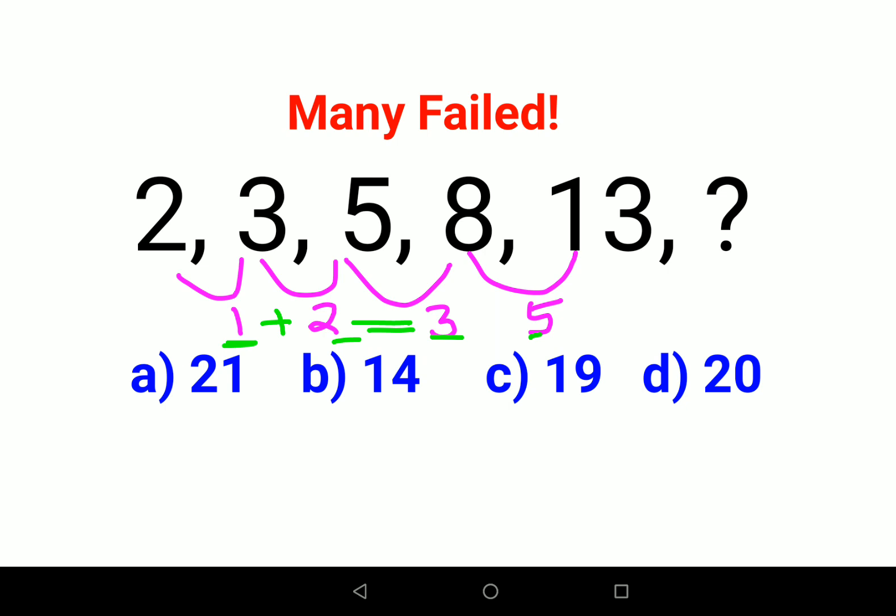If you look closely, I'll get 1 when I add 1 plus 2, I get 3, and when I add 2 plus 3, I get 5. So now what we should do is add 3 plus 5, that gets you 8. So you add 8 to 13 and that should be your answer for the question mark, which is 21.